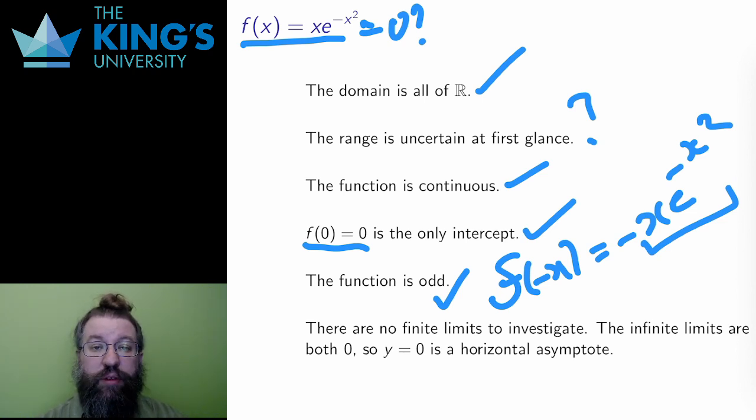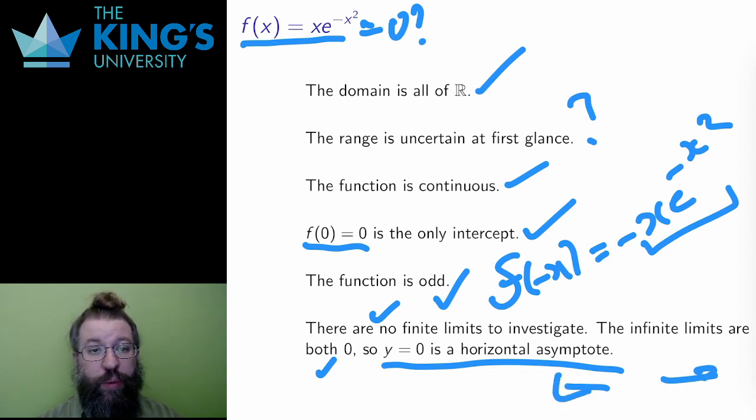There is no periodicity here. There are no finite limits to check, since there are no breaks in the domain. The limit at infinity is 0, since the exponential decays much faster than the linear function grows, and the same is true for negative infinity. This means that y equals 0 is a horizontal asymptote in both directions, and it has to be in both directions as well to match the odd symmetry I just mentioned.